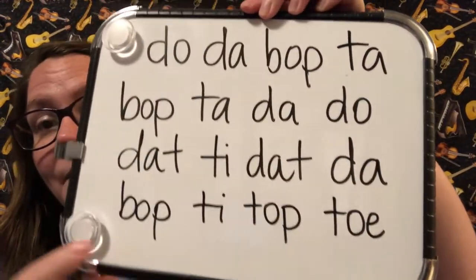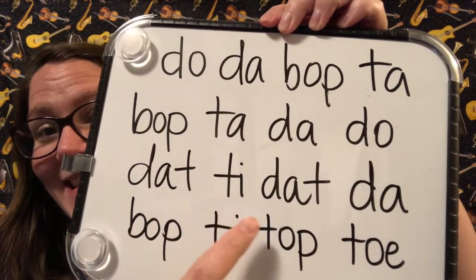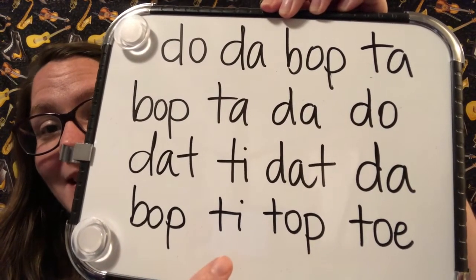Now that we've gotten our feet wet, we're going to add some more lines of syllables. I kept my two original lines and added two more: dat, tee, dat, da, da and bop, tee, top, toe. Those are just more ideas you can use. For the whole little song we're going to do, there will be 12 lines where we can say syllables. I'll keep this in front of me and repeat each line twice, then try to use them in a different order without writing it down — that's what we want to get to eventually for scatting.